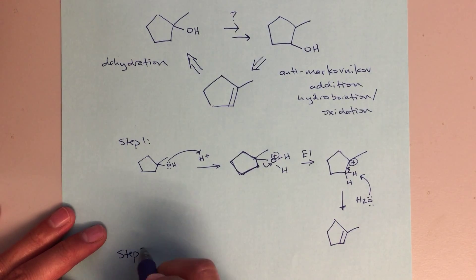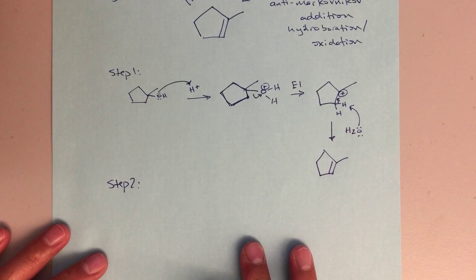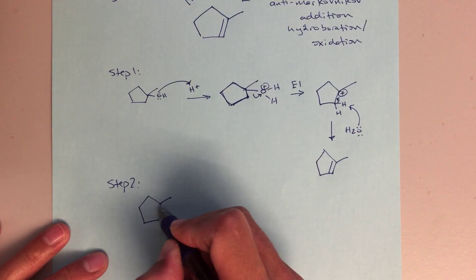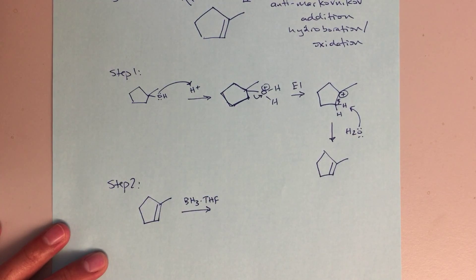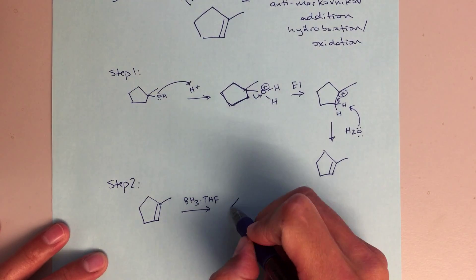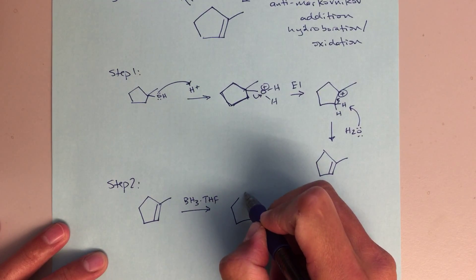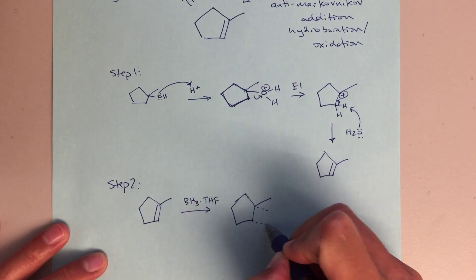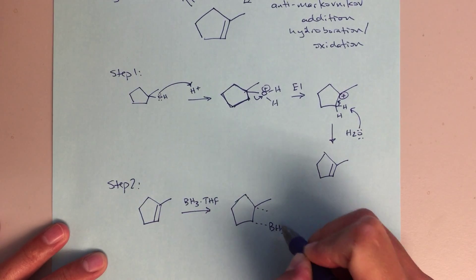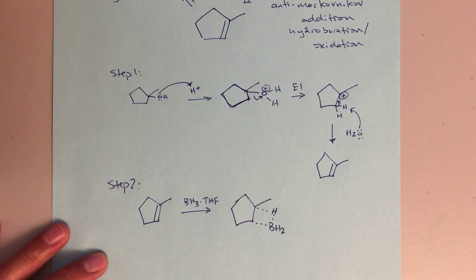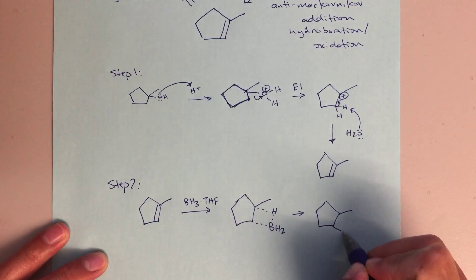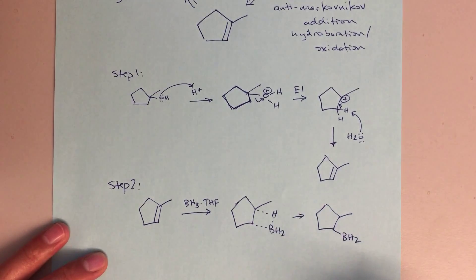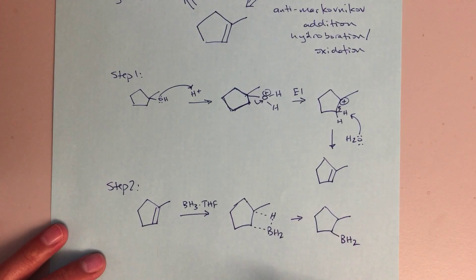In step two, we're now going to take this alkene and we're going to do that hydroboration oxidation. We're going to use BH3 THF for that, and that's going to lead us to some intermediate that looks like this, and then that's going to form this BH2 hydroborated product.